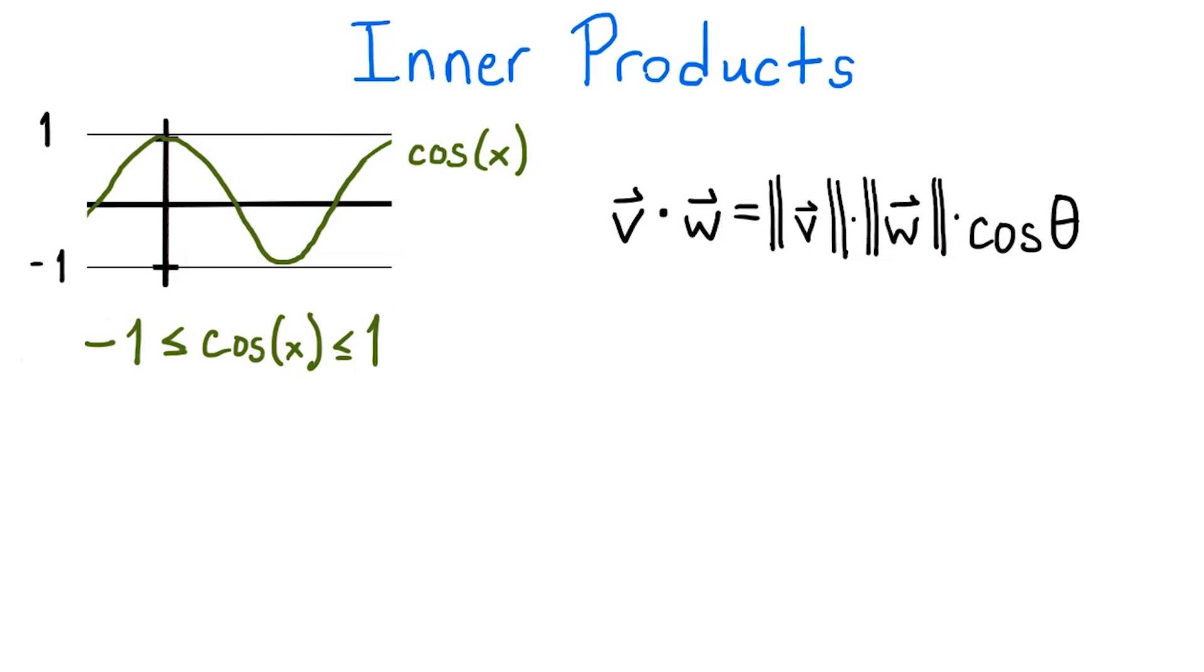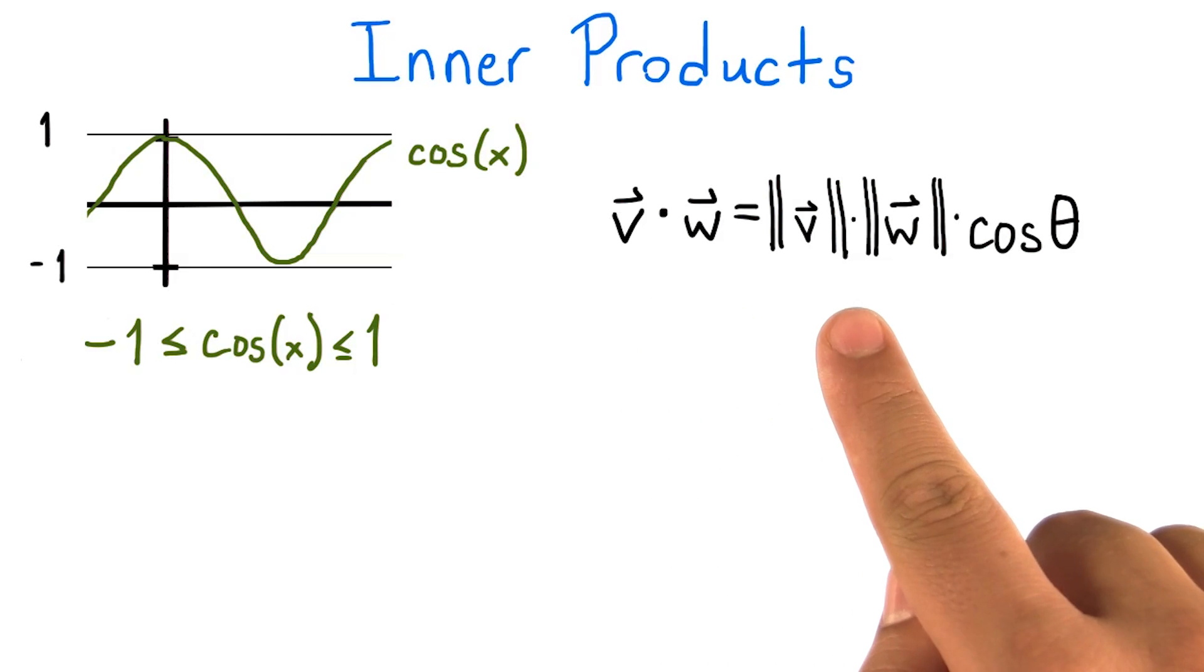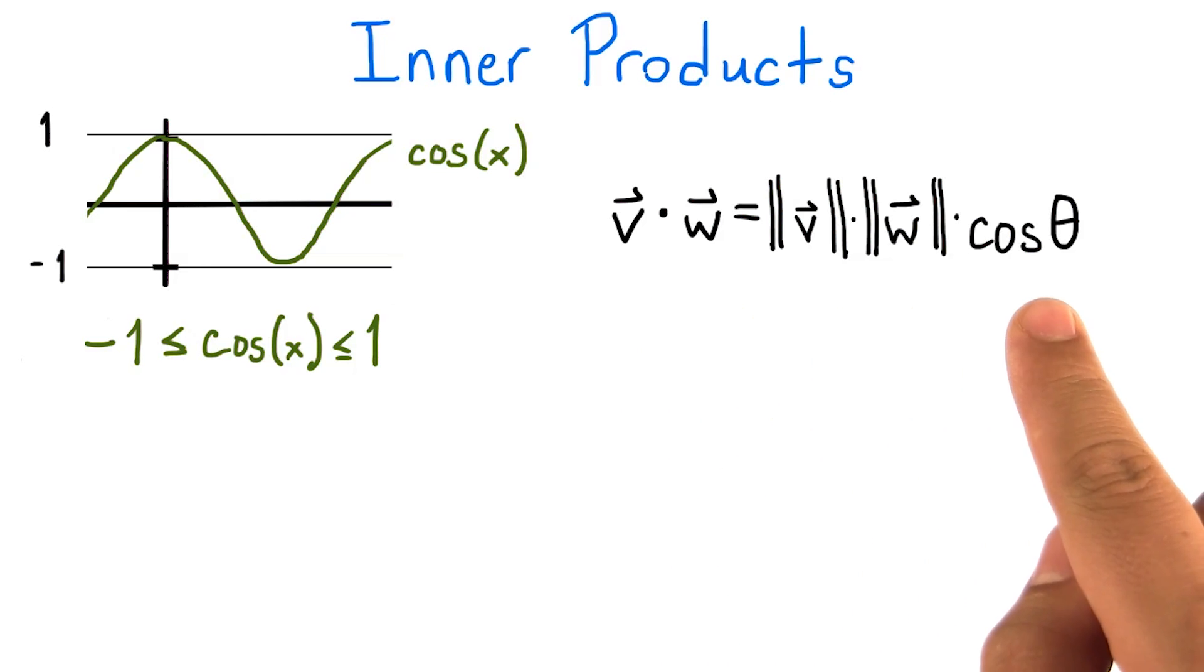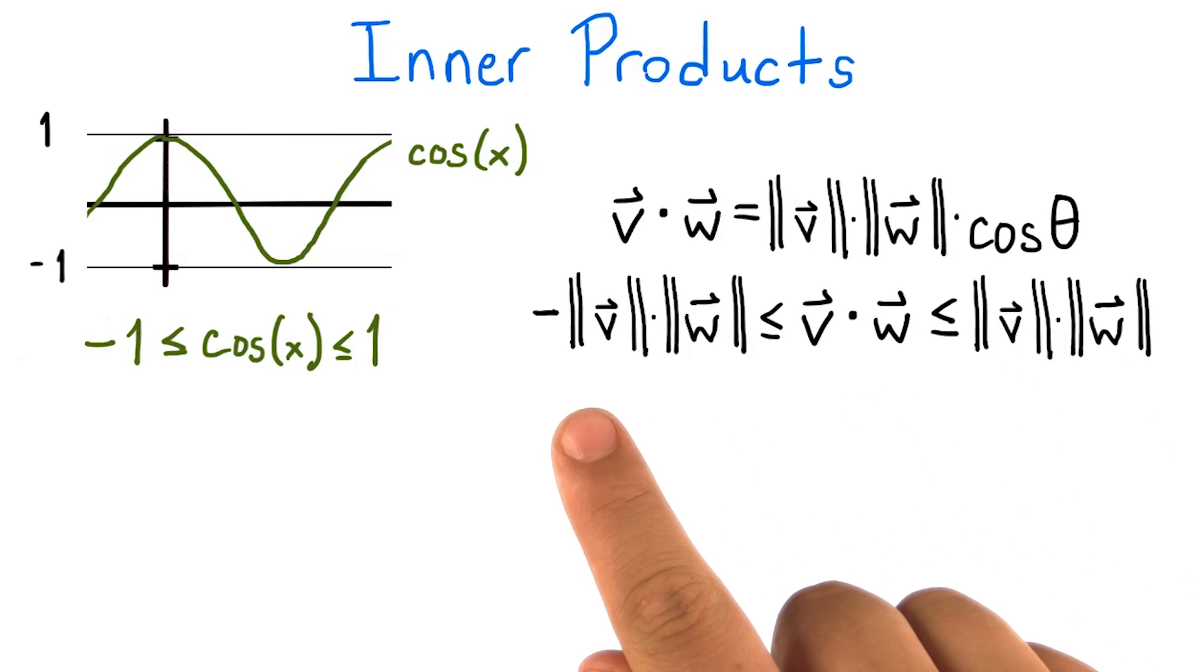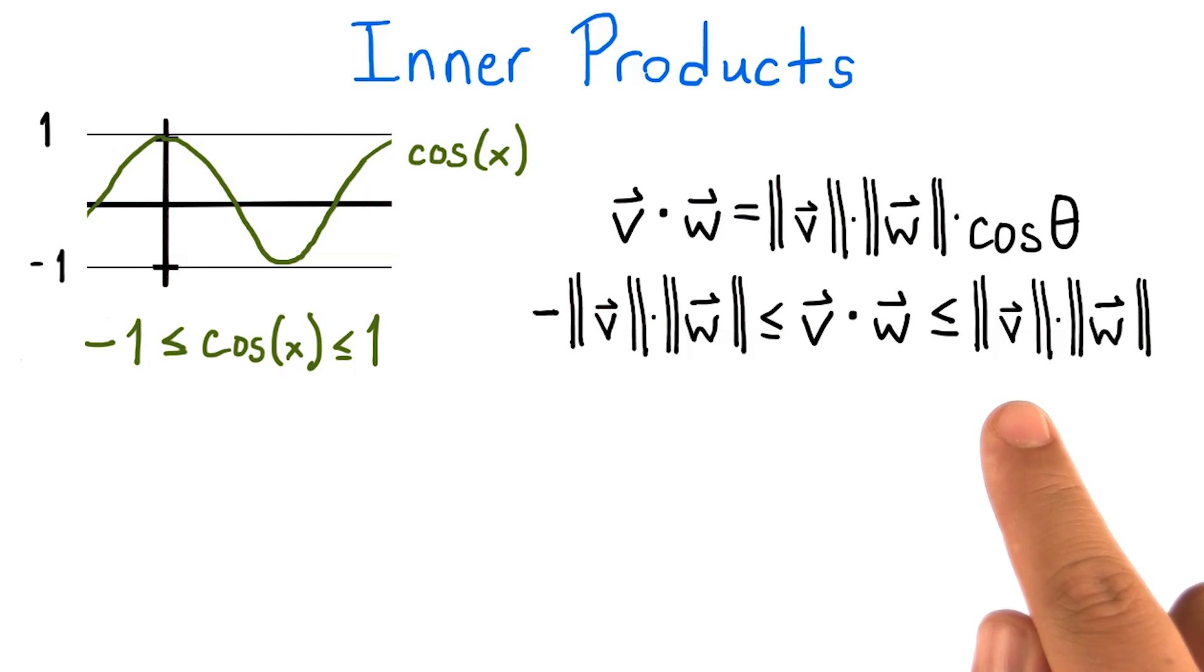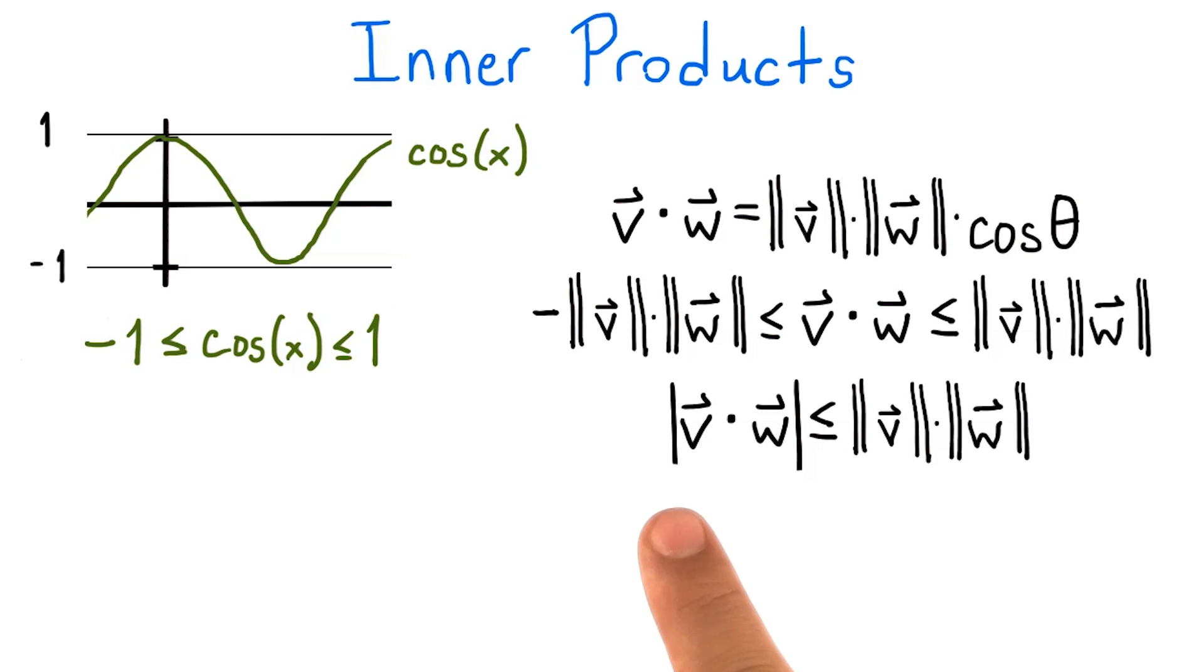Using the earlier equation, that the dot product of v and w is the product of the magnitudes times cosine of theta, we see that the dot product is bounded below by negative magnitude of v times magnitude of w, and above by magnitude of v times magnitude of w. We can express this inequality more succinctly as the absolute value of v dot w is less than or equal to the product of the magnitudes of v and w. This is a famous inequality called the Cauchy-Schwartz inequality, and you will see this inequality pop up all over linear algebra and mathematics in general.